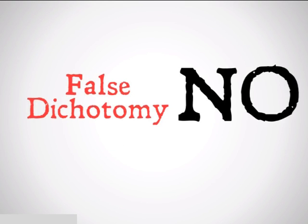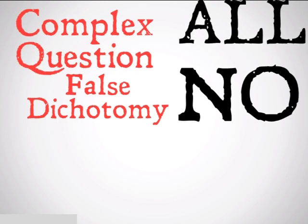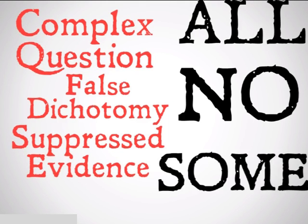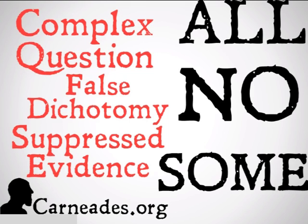That was False Dichotomy. Also today, we're going to be doing the universal negative. Yesterday was complex question and the universal affirmative. Tomorrow's going to be suppressed evidence and the particular affirmative. Watch a new video every single day for 100 days here at carnades.org. Stay skeptical, everybody.